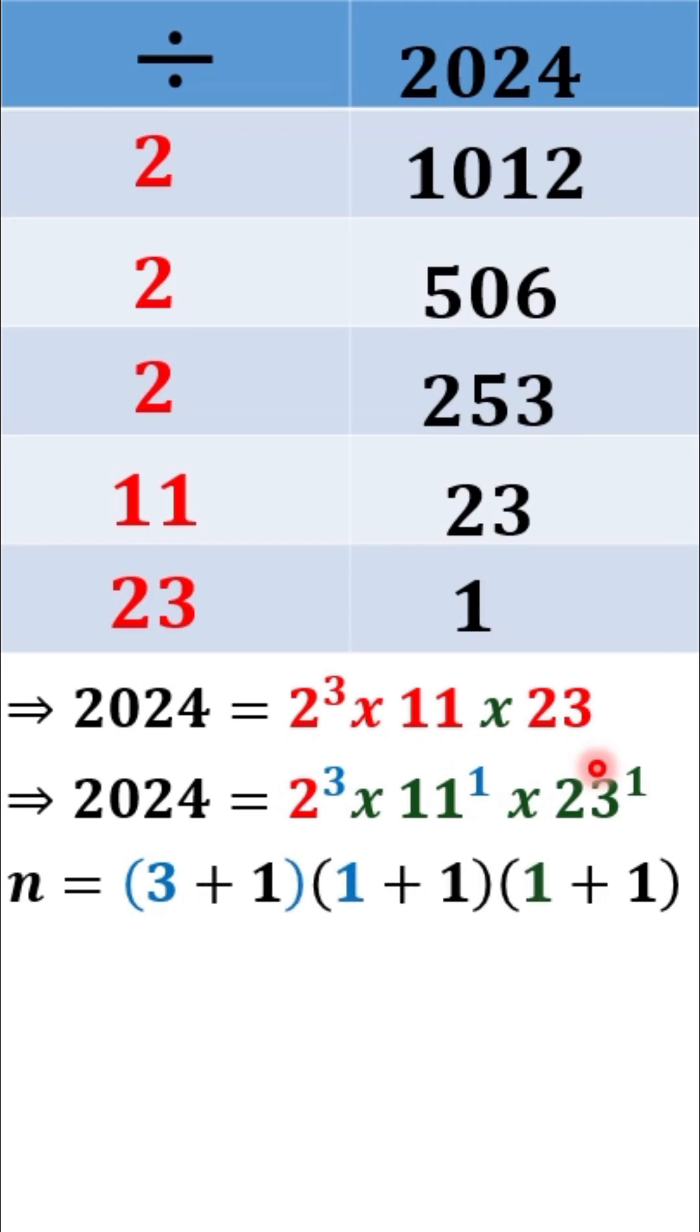This means that to get our number of divisors, that is n, we simply take the powers. We take 3, add 1 to it, multiply. We take the next power 1, add 1 to it, multiply. Take the next 1, add 1 to it, and multiply.